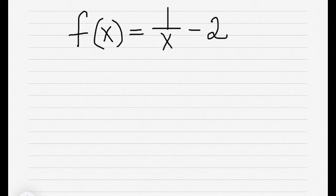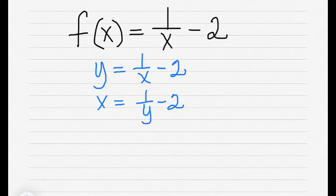Again, we're going to rewrite this with y = 1/x - 2. We're going to switch our x and y. The first thing I'm going to do is add 2 to both sides, and I'm left over here with x + 2 = 1/y.